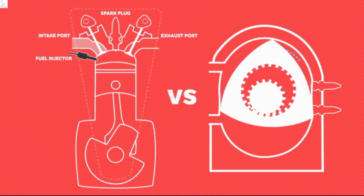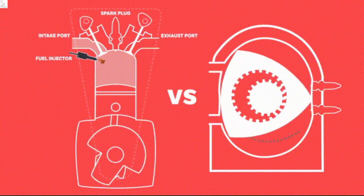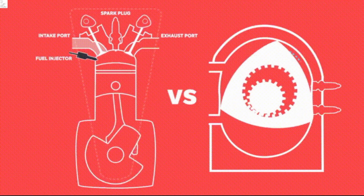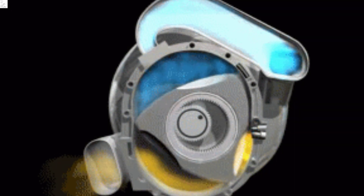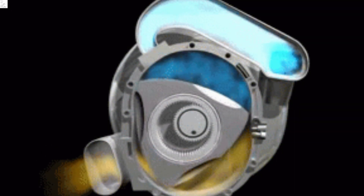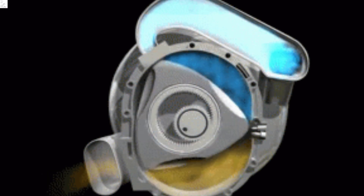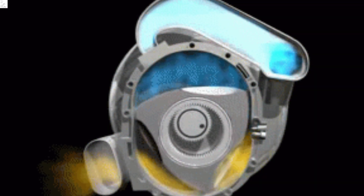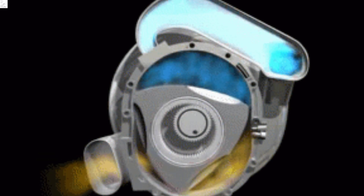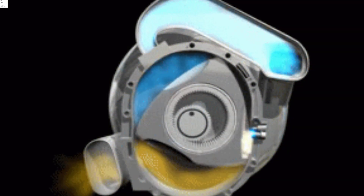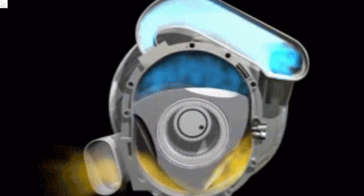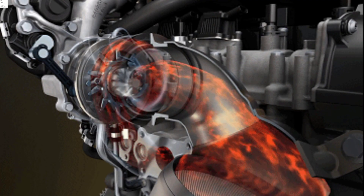5. Wankel engine: the Wankel engine is a type of rotary engine invented by Felix Wankel. It has a triangular rotor that rotates within a housing, generating power through combustion. While technically a variant of the rotary engine, the term "Wankel engine" is often used specifically to refer to the engines produced by Wankel GmbH, such as those used in some Mazda vehicles.